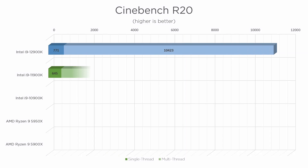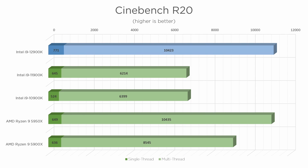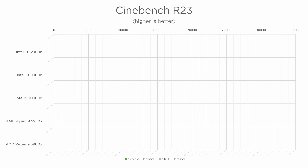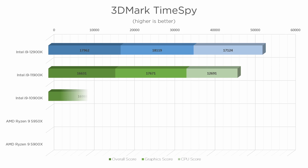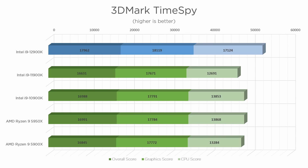Regarding performance, Intel's 12th Gen is significantly faster than their previous 11th Gen processors. For Cinebench R20 and R23, it almost doubles the performance. This is evidenced further in 3DMark Time Spy, where it either nearly or easily doubles the performance of Intel's last generation.